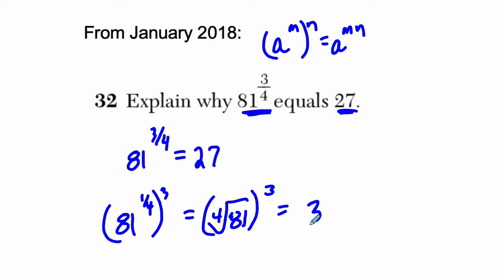In this case, the fourth root of 81 is 3, and 3 cubed is our answer, 27.